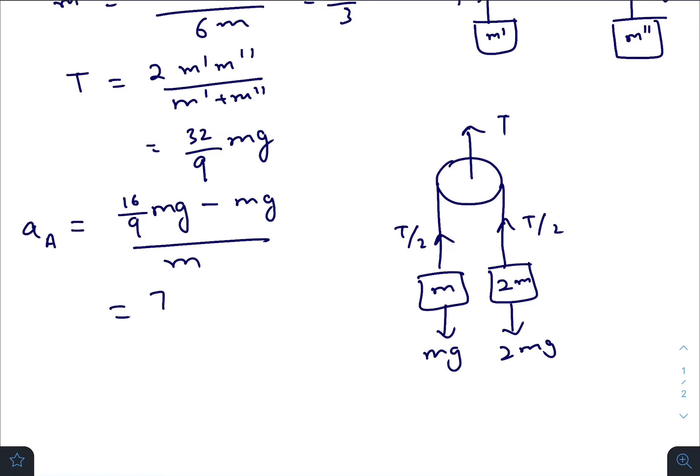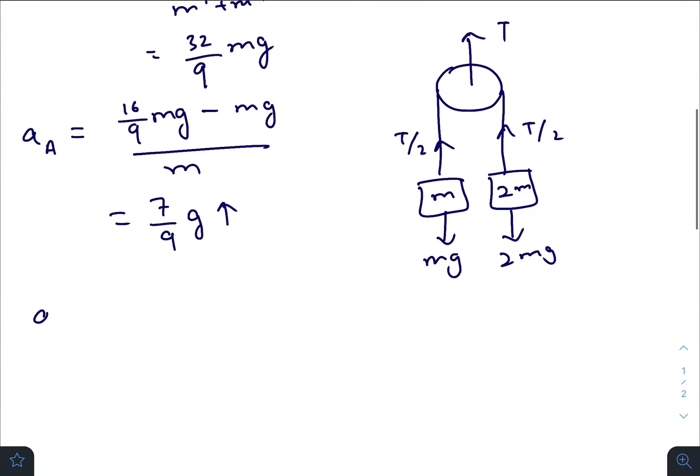So it will be 7 by 9g upwards. Acceleration of B will be 2mg downwards minus 16 by 9mg upwards divided by 2m, that is g by 9